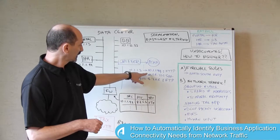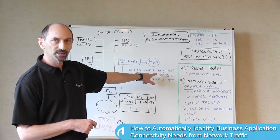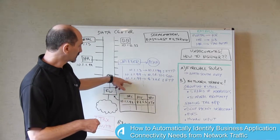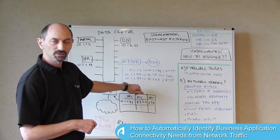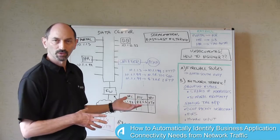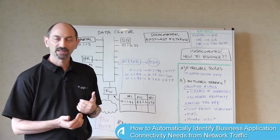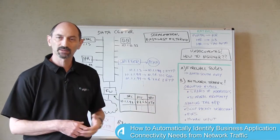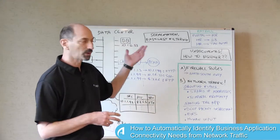So here in this example, there's this 10.1.1.99 IP address that appears in the destination of this flow and in the source of these other flows. If these three flows all go through the same IP address, then it makes sense that they are somehow logically connected and you could group them into one application.